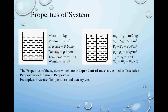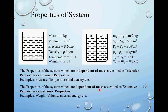From this example we can see that some properties are independent of mass. The properties of the system which are independent of mass are called intensive properties or intrinsic properties. Examples are pressure, temperature, and density — all remained the same in both parts. Whereas some properties change with a change in mass — these properties which are dependent on mass are called extensive properties or extrinsic properties. Examples are weight, volume, internal energy, etc.